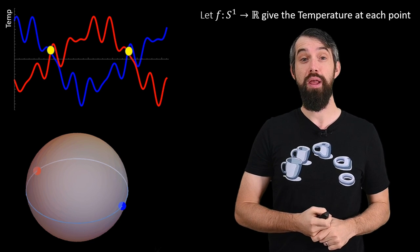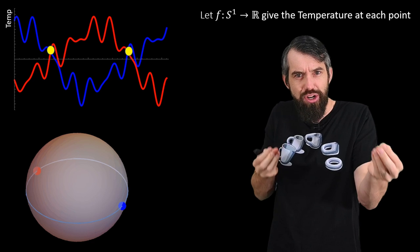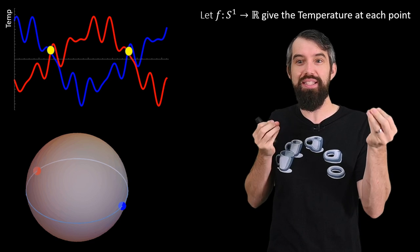But my claim is this must cross at some spot. There must be some location where the temperature at the red point and the temperature at its antipode, the blue point, is exactly the same.